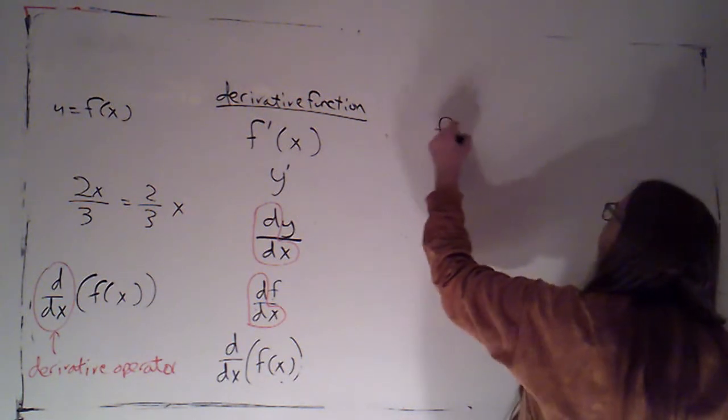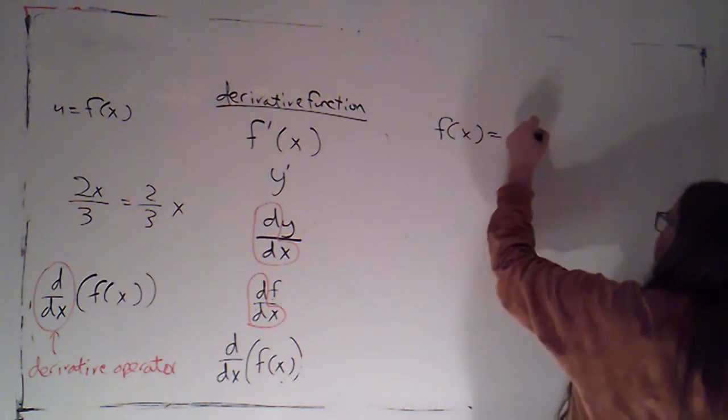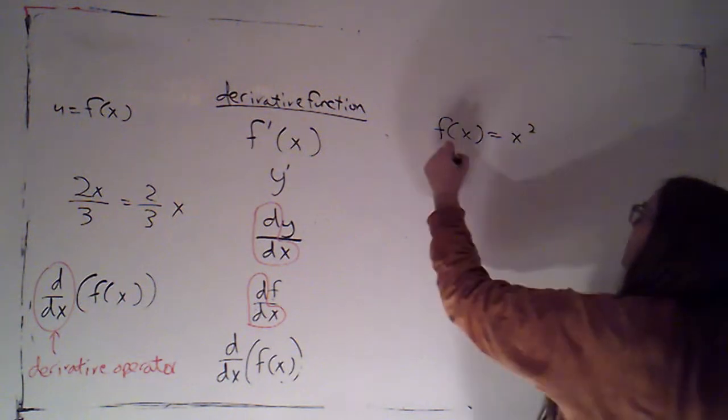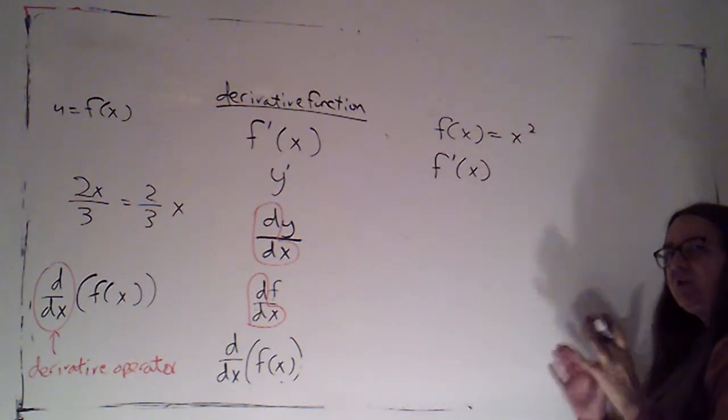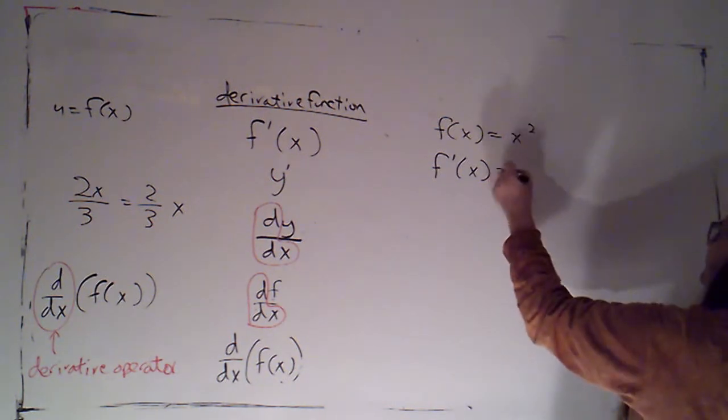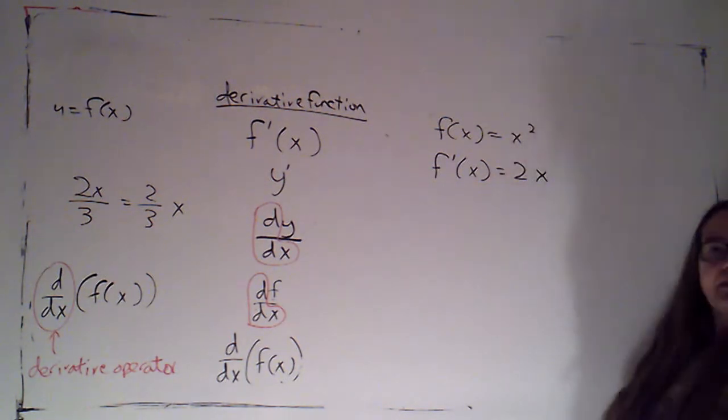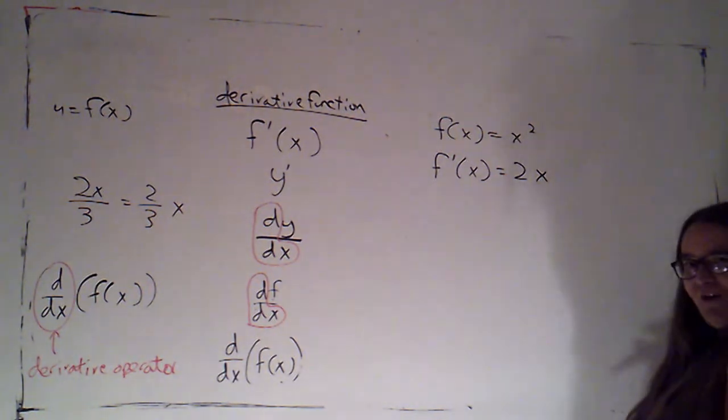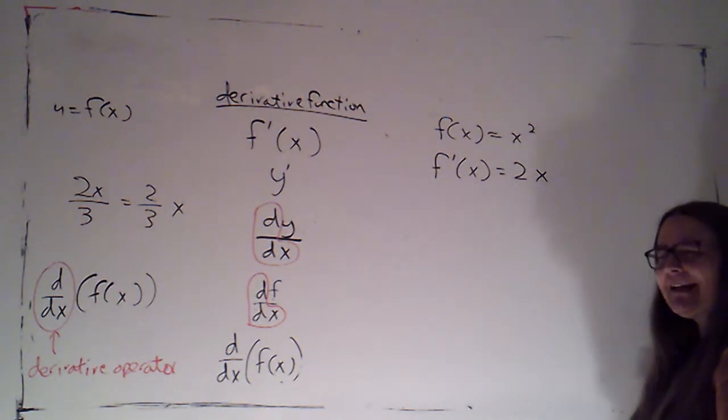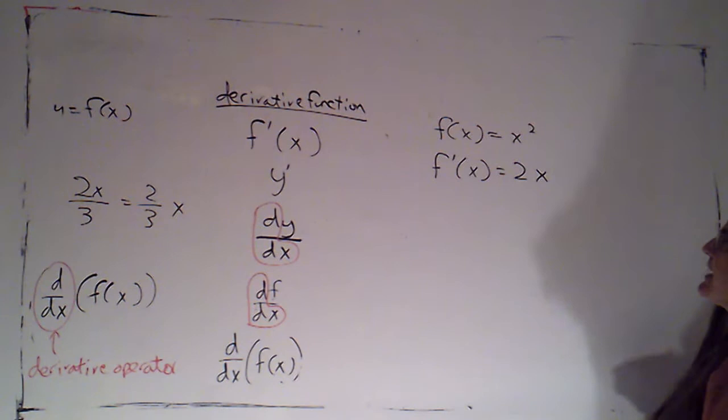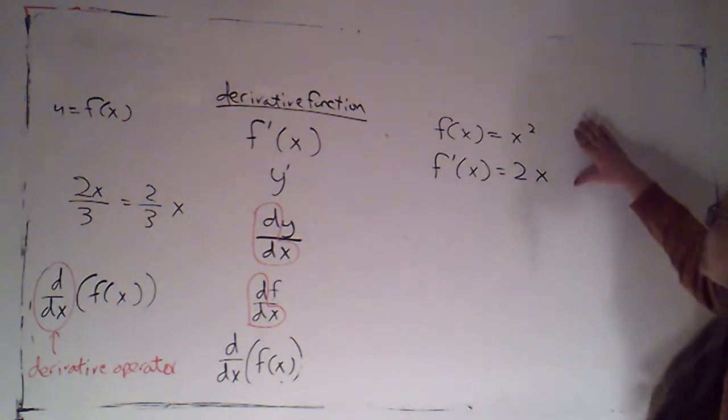If I have f of x equals x squared, we've seen, in fact, I think this was the first problem where we calculated together the formula for the derivative function, that's going to be 2x. Something I don't expect you to have memorized at this point. Eventually, we're going to learn a shortcut for calculating derivatives so that you can do that very quickly. And some of you may already be familiar with that shortcut.